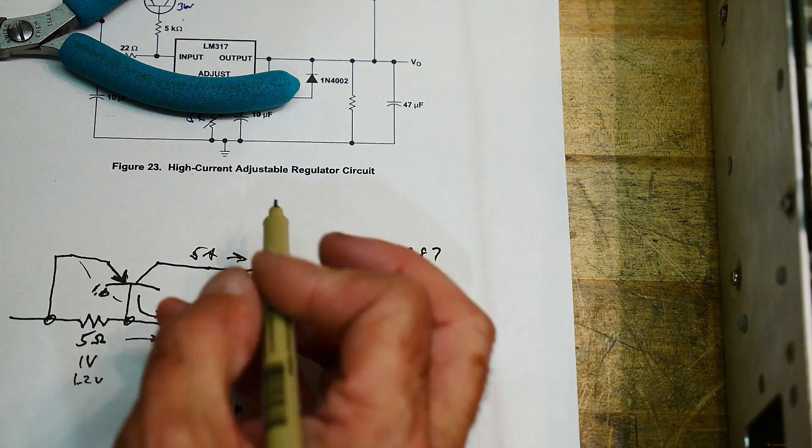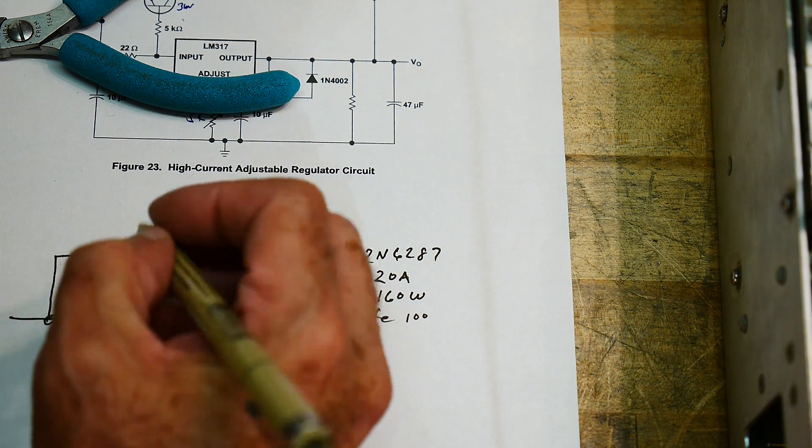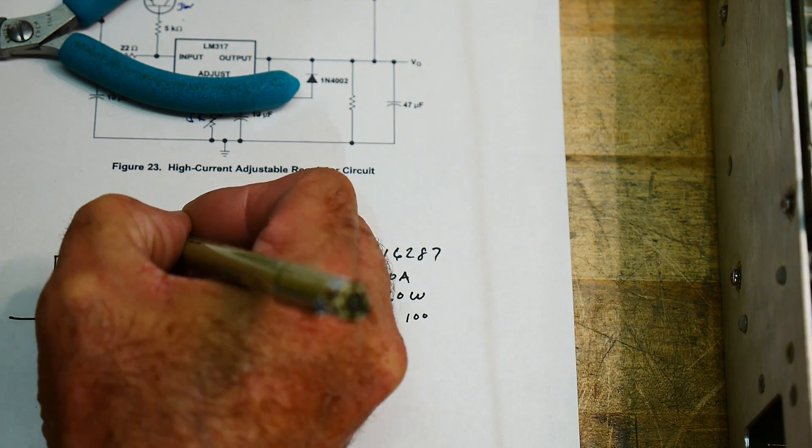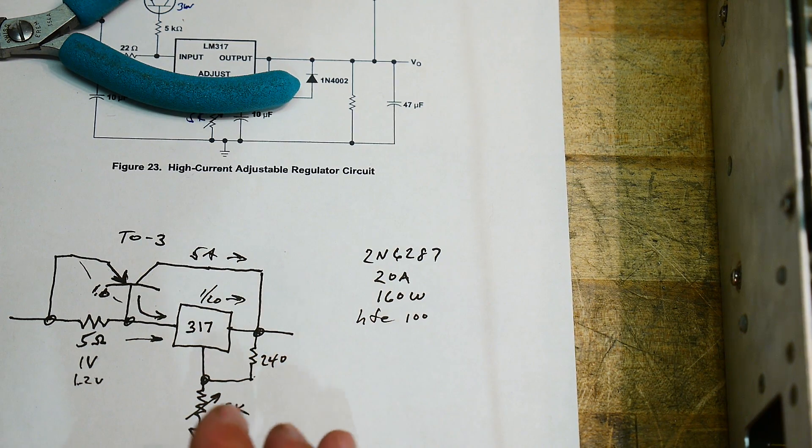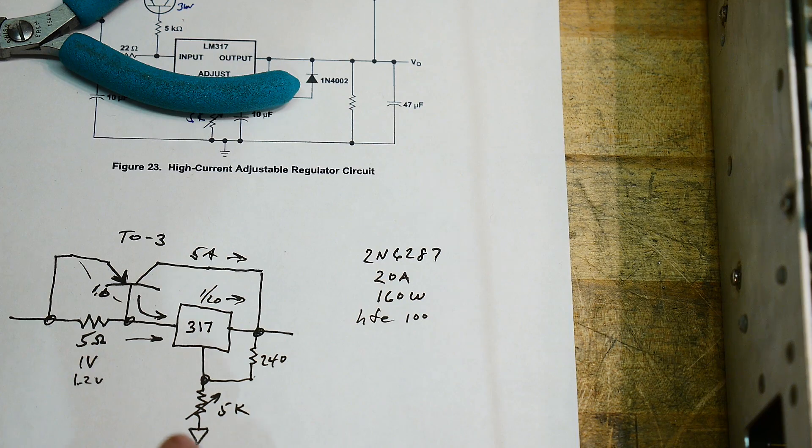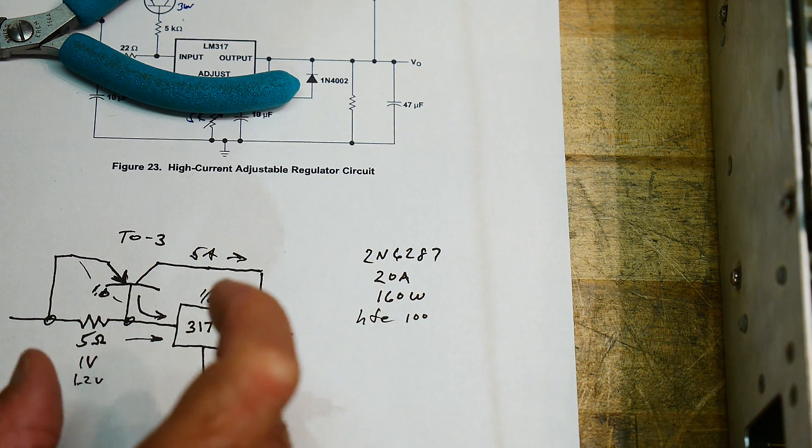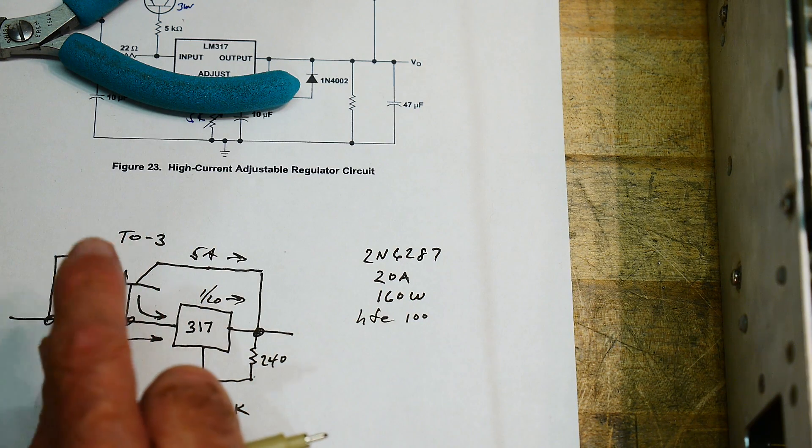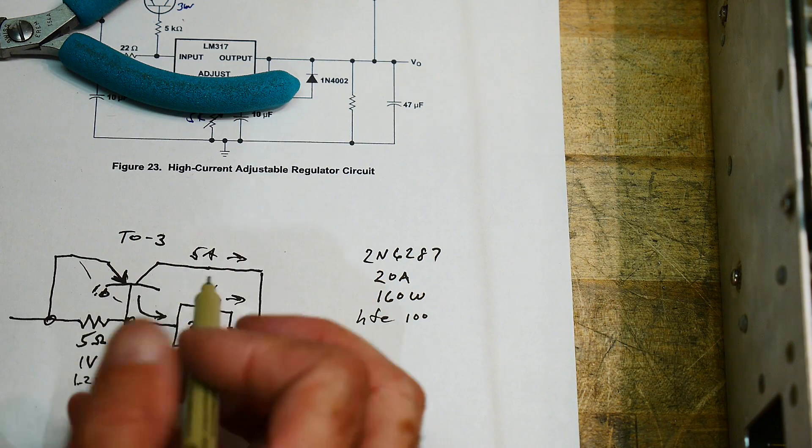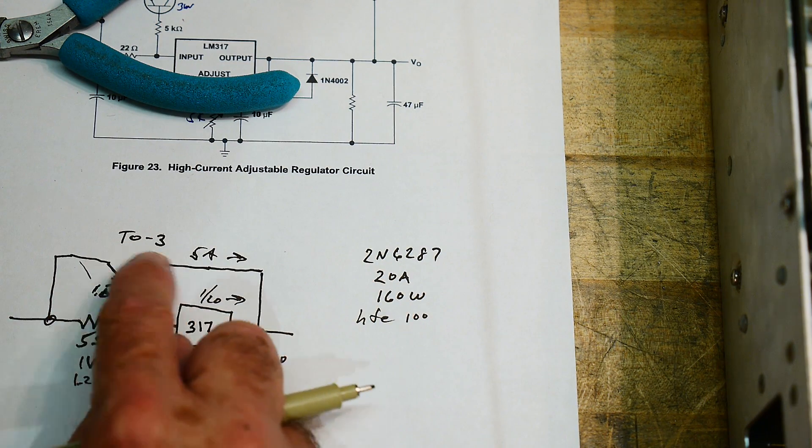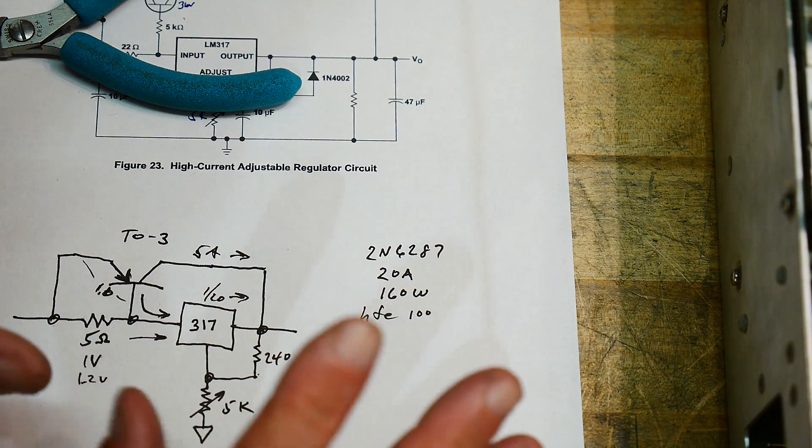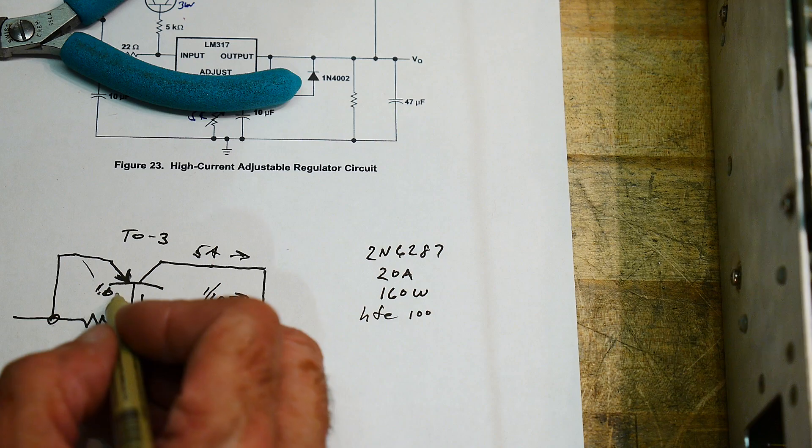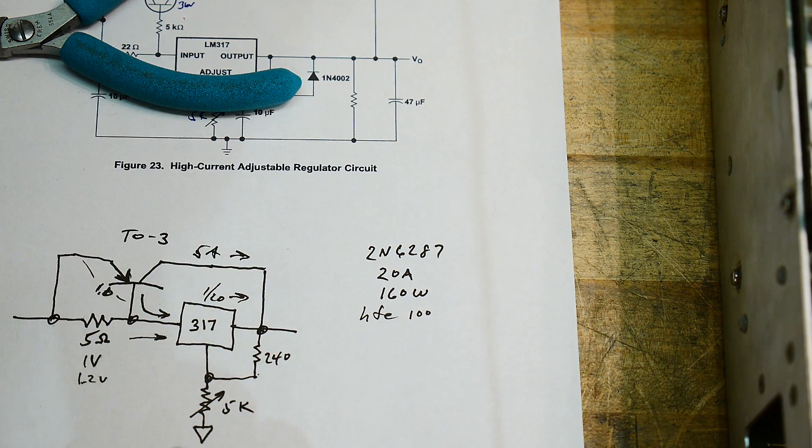This is what I ended up putting into my machine. This is a TO-3, so it bolted right into the existing PC board. The cool part was the way that PC board was laid out. It originally had the case, which was the collector of the NPN, tied to the output. In this particular case, the case of the TO-3 is also the collector, so I didn't have to change the PC board at all. It just bolted right into the circuit. The base and the emitter were on the same pins as the original NPN, so it worked out really nice.